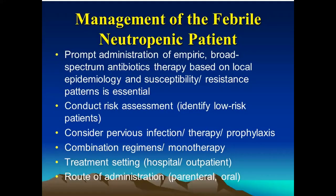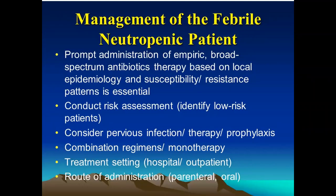Management of the febrile neutropenic patient: prompt administration of empiric broad-spectrum antibiotic therapy based on local epidemiology, susceptibility, and resistance patterns is essential. Conduct a risk assessment to identify whether the patient is high risk or low risk. Consider previous infection, therapy prophylaxis, combination versus monotherapy regimens, treatment setting — whether they need hospitalization or can be treated as outpatient — and route of administration.